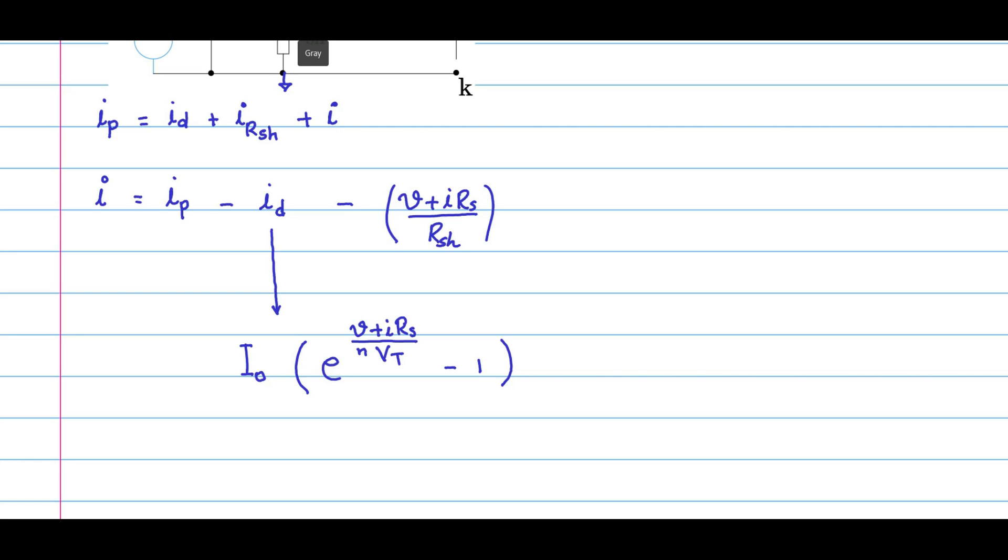I_naught is the reverse saturation current. V_T is the volt equivalent of temperature, given by Boltzmann constant into the temperature divided by q. q is the electronic charge in coulombs, k is the Boltzmann constant, T is the temperature in degree Kelvin. If you substitute the Boltzmann constant and the electronic charge, you will get this to be a value T by 11,600.